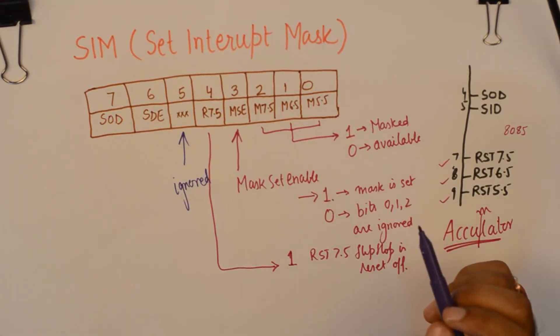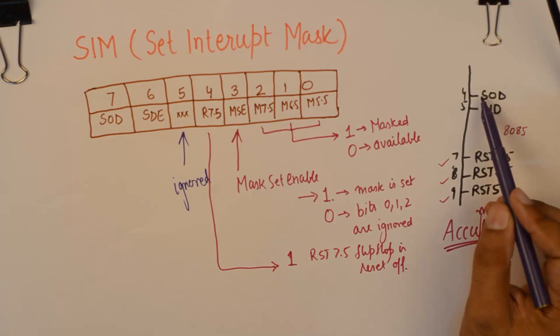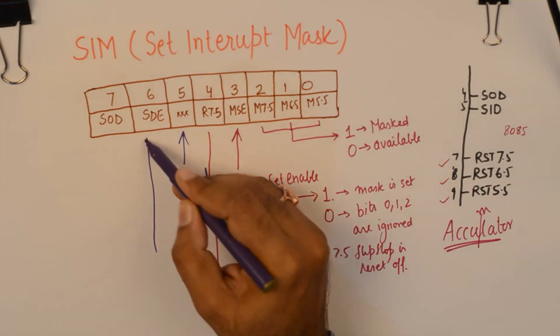The set interrupt mask not only gives you the ability to control the interrupts but also it gives you the ability to send the serial data out of the serial output data pin, which is pin number 4 in 8085. What you need to do is, you need to enable this bit.